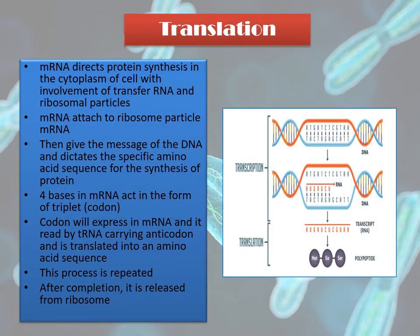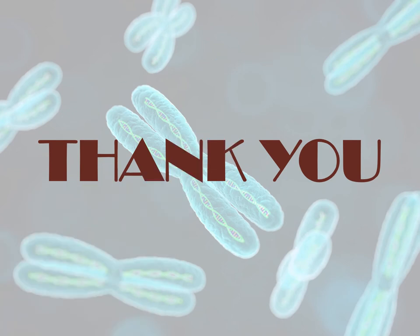Then, let's move to the translation process. In this process, mRNA directs protein synthesis in the cytoplasm of cells with the involvement of transfer RNA and ribosomal particles. It occurs with the attachment of mRNA to the ribosome particle, which reads the message from DNA and detects the specific amino acid sequence for the synthesis of the protein. The bases in mRNA act in the form of triplets, and each triplet acts as a code for a particular amino acid — this triplet is called a codon. There may be more than one codon for the same amino acid. The codon expressed in mRNA is read by transfer RNA carrying the anti-codon, and it is translated into an amino acid sequence. This process is repeated, and the protein is synthesized and released from the ribosome.